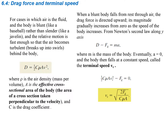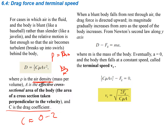Drag is given by the equation D = ½CρAv², where C is the drag coefficient, ρ (Greek rho) is the air density in kilograms per cubic meter, A is the effective cross-sectional area — for a sphere that's a circle, for a cube oriented on one side it's a square — and v is velocity. The drag coefficient C is similar to the coefficient of friction and generally ranges between zero and two, though it can sometimes be outside that range.